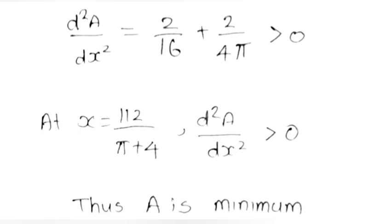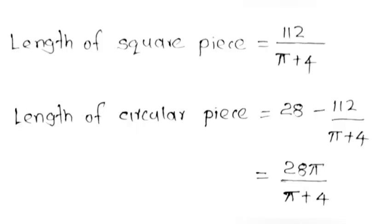Since d²A/dx² > 0, A is minimum. Length of square piece = 112/(π + 4). Length of circular piece = 28 − 112/(π + 4) = 28π/(π + 4).